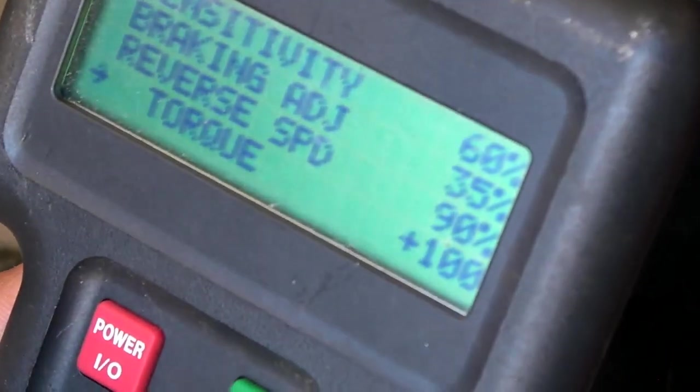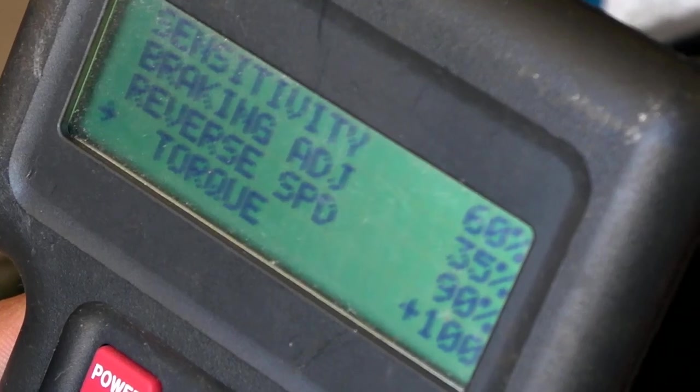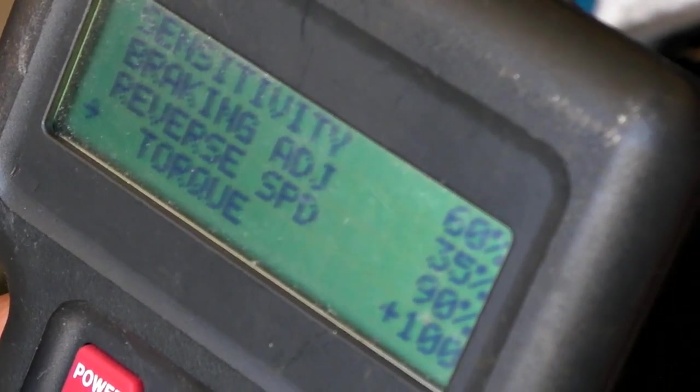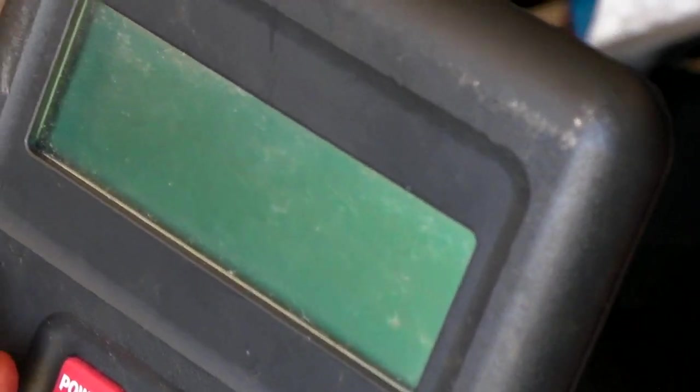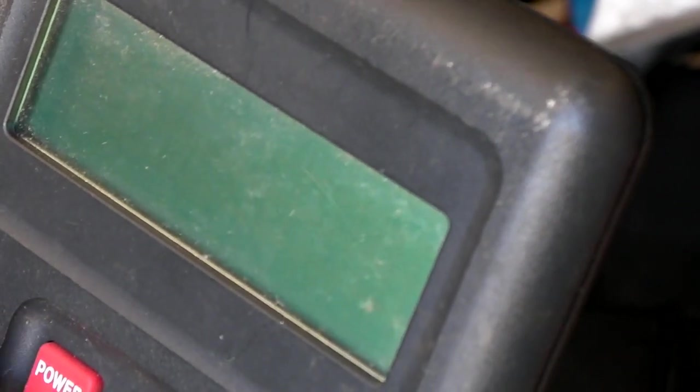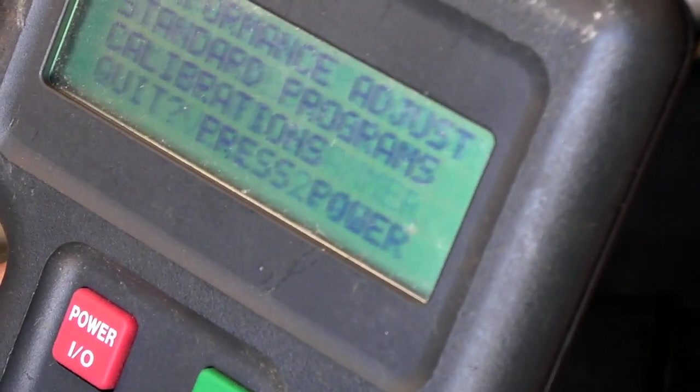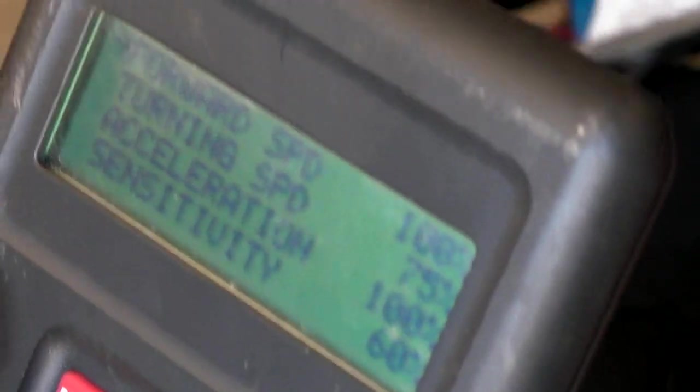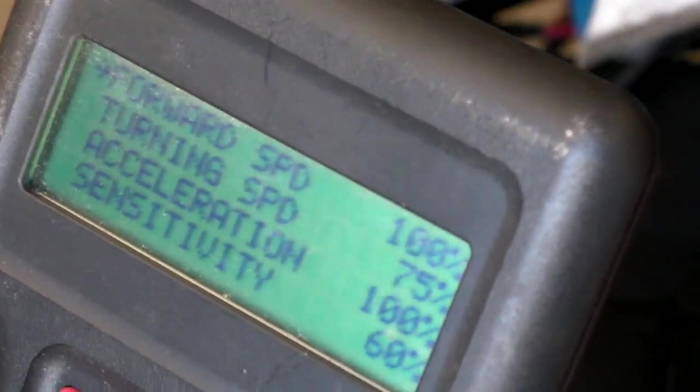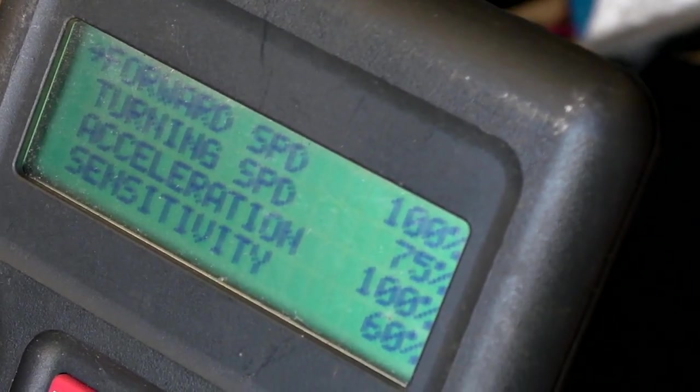So, like I recommended before. Go into the programming. Pick one setting. Change it. Save it. And then turn off the controller. Drive it around. Test it out. If you like it, then leave it. And go back in. And pick another setting. And adjust that. It will take a while. But it will ensure that you set up your chair properly. And to suit your needs.